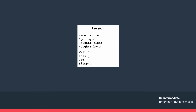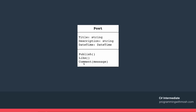Let's look at another example. A blog post can have attributes or fields like title, description, and date/time, and it can have methods like publish, like, or comment — which receives a message.